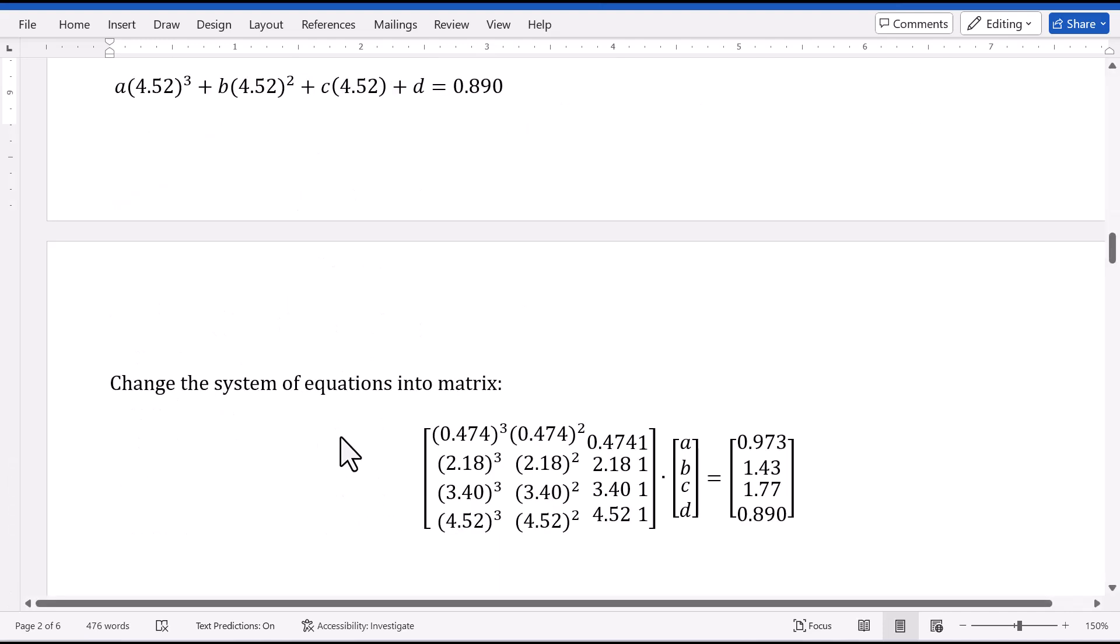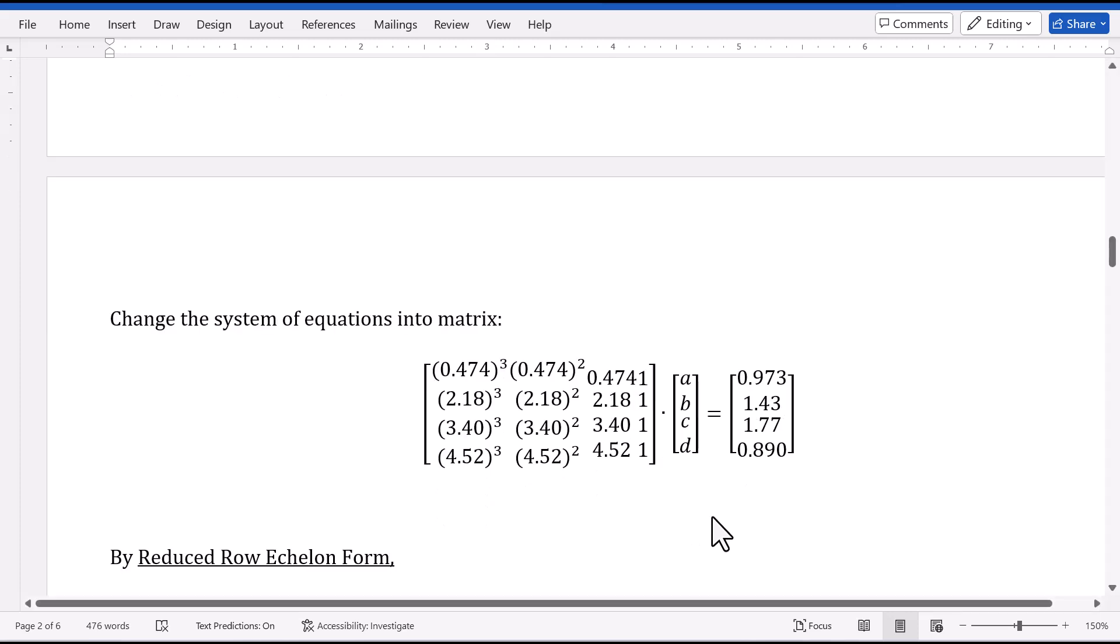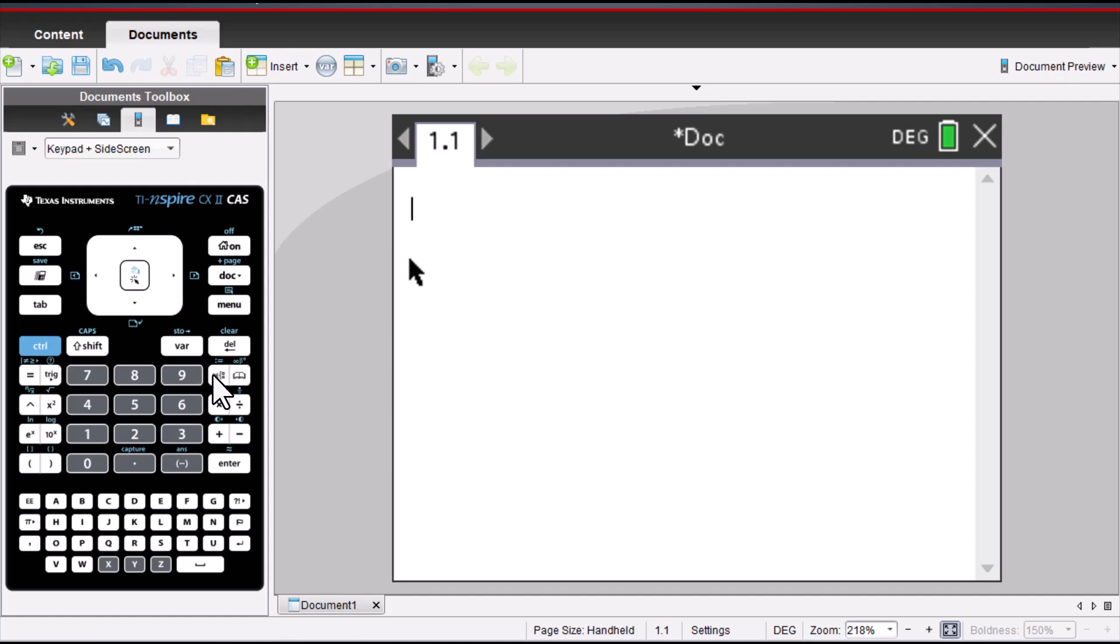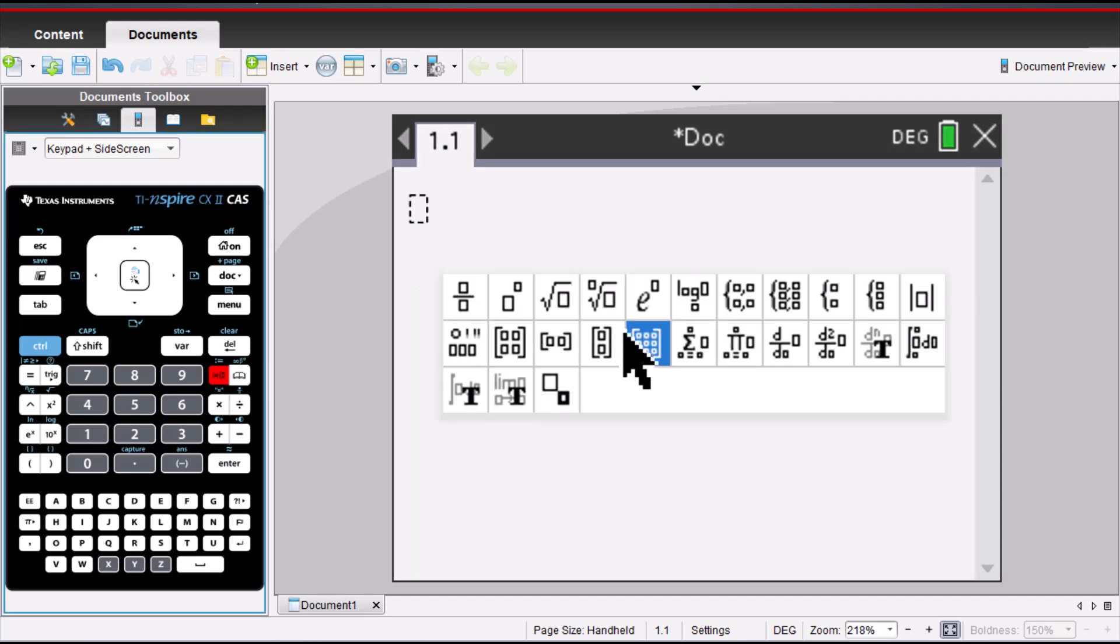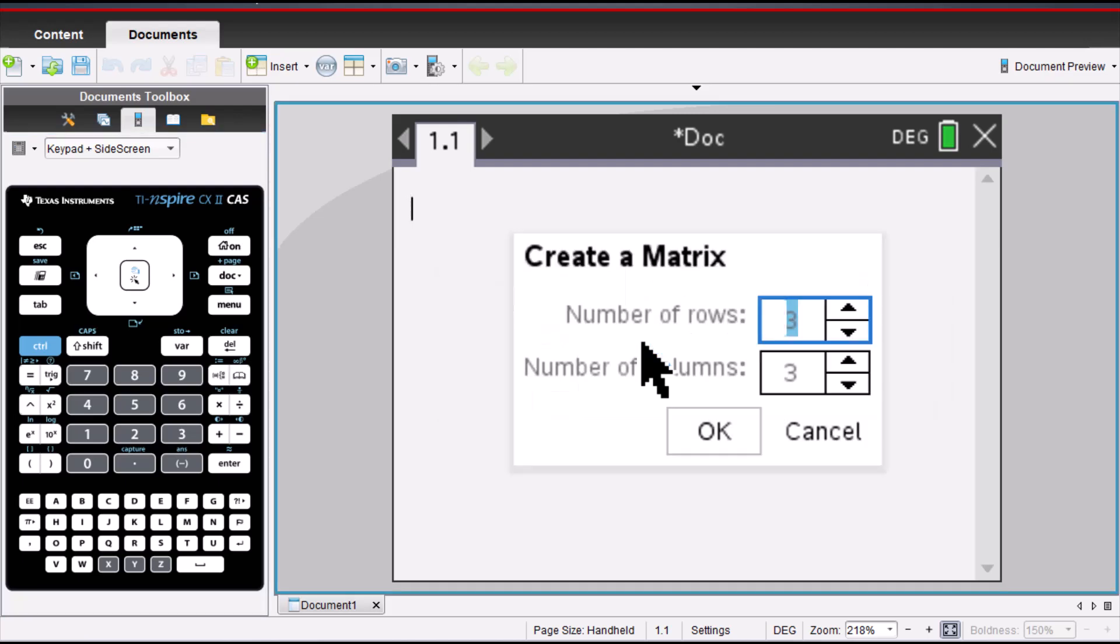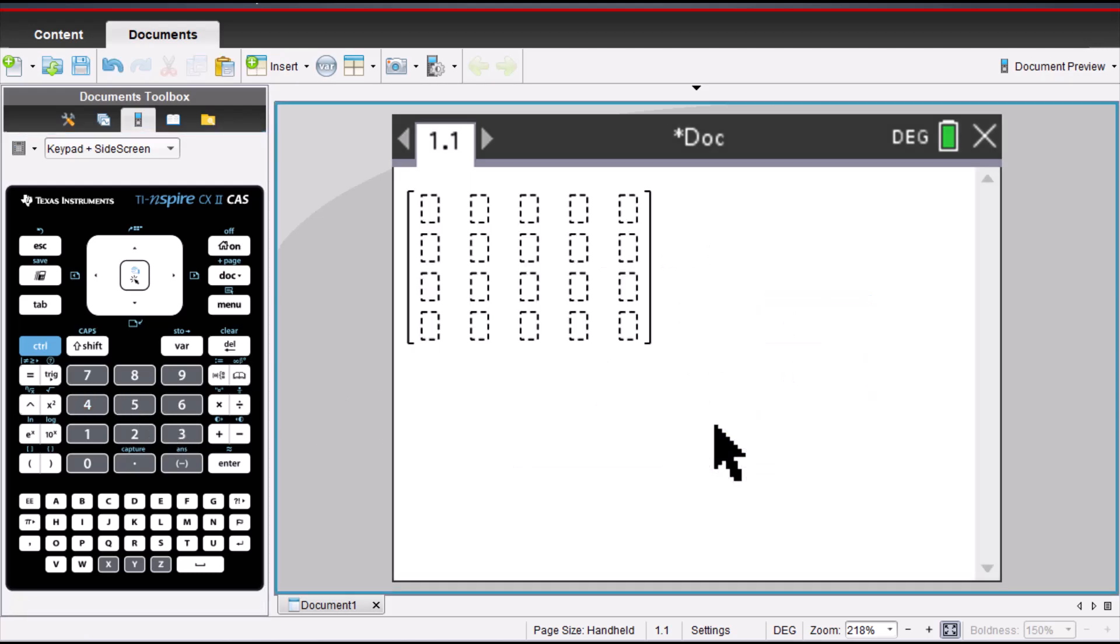So, I change this system of equations into matrix form. Then I use the calculator. Now click on this math template. Click on this matrix. We need 4 rows and 5 columns. Enter.